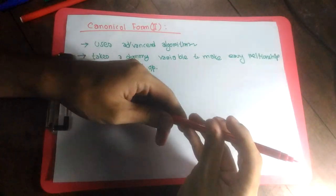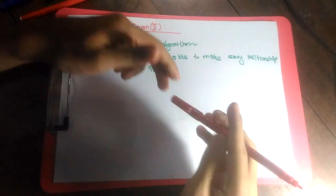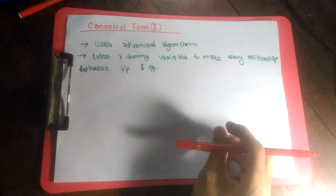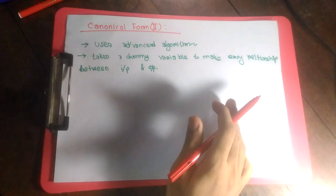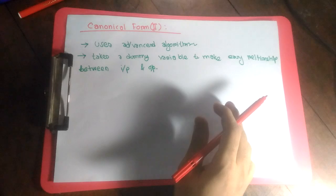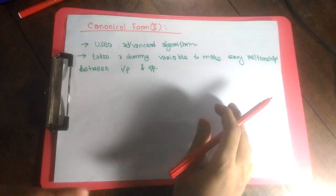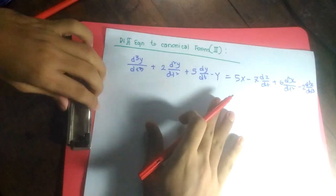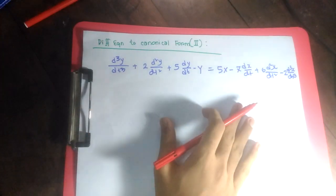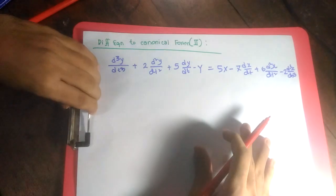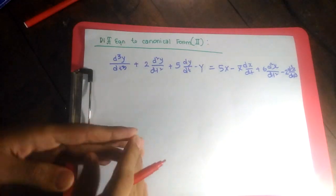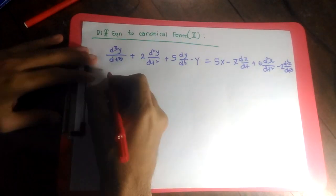We have learned Canonical Form 1 in the last video. In this video I'm going to talk about Canonical Form 2. It basically uses an advanced version of the Canonical Form 1 algorithm, and it also takes a dummy variable beside your input x and output y. Let us go to the straightforward algorithm — we're going to go from a differential equation to Canonical Form 2 simulation diagram.